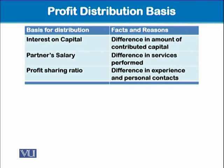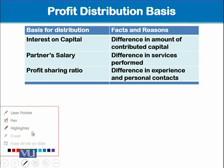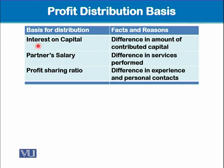When we say profit distribution statement, there are some bases on which the partners distribute profit among themselves. Number one is interest on capital. Interest on capital was not an issue under sole proprietorship because there was only one partner — in a way, only one owner.